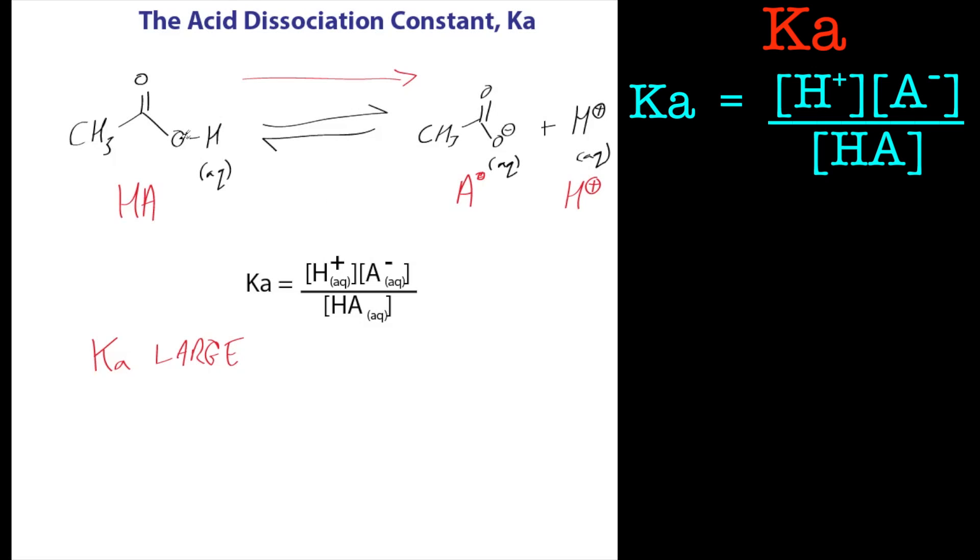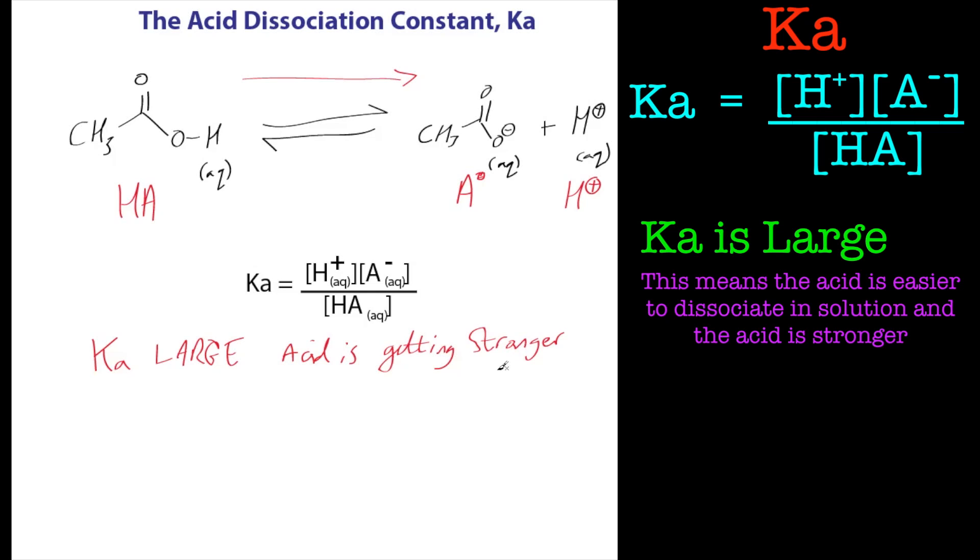But the fact it doesn't completely dissociate means it's defined as a weak acid, and an equilibrium is established, and that's what this means. So a Ka is large, that means the acid is getting stronger, but it's not defined as a strong acid. And I'll write this up at the side as well, because I do apologize for my handwriting.